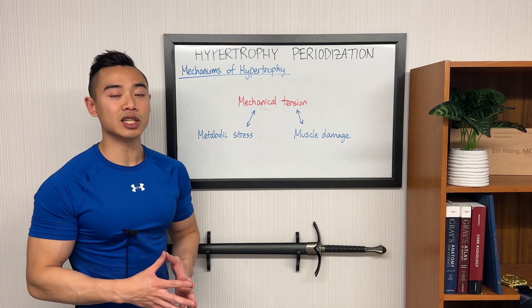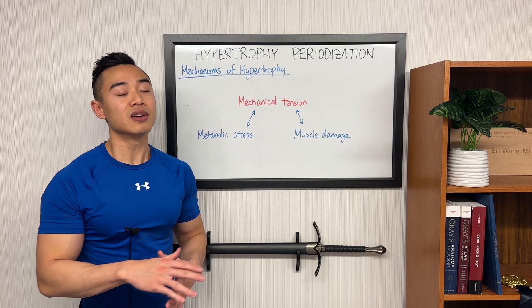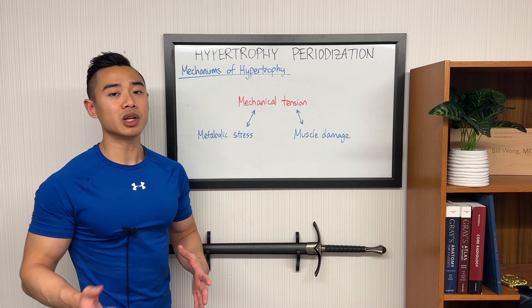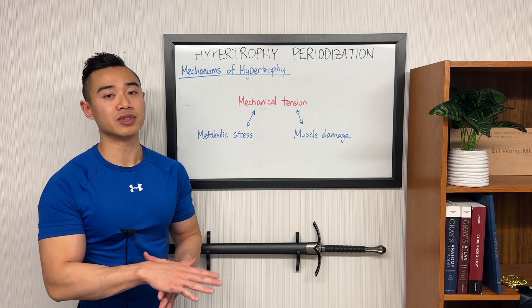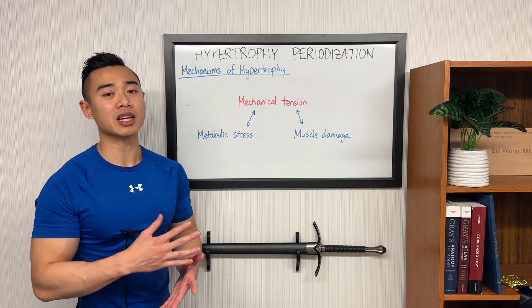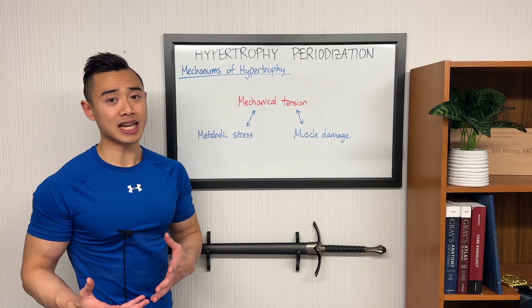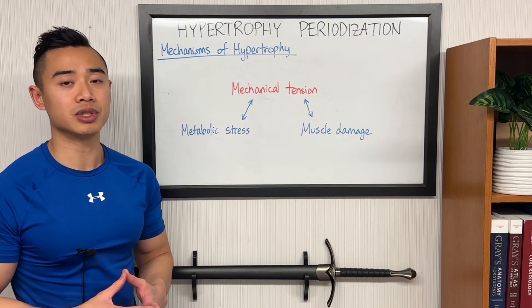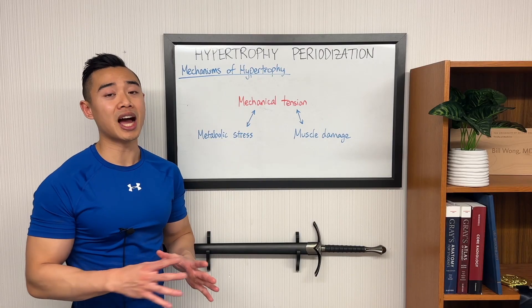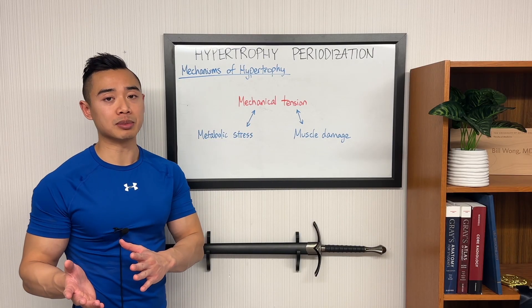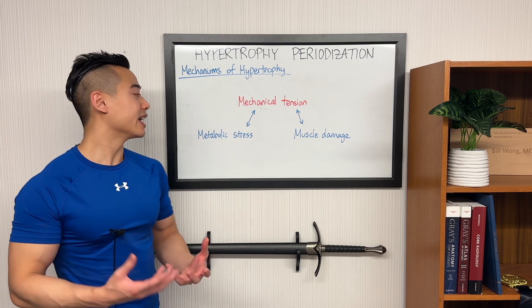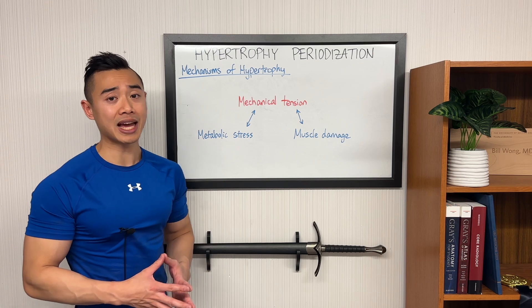Next we have metabolic stress, and the idea here is you get a hypertrophic effect from the metabolites that build up around training. When you perform hard training, especially hypertrophy type training, you will generate metabolites like lactate. You can roughly think about this as the burn you get at the end of your sets. There are techniques you can use to particularly try and emphasize this metabolic stress pathway — in particular using higher reps like higher than 12 reps per set and using various intensity techniques like drop sets and myo reps can encourage the metabolic stress pathway.